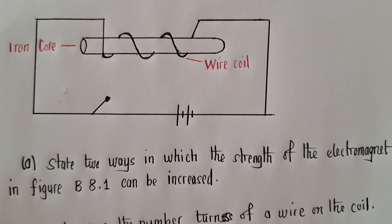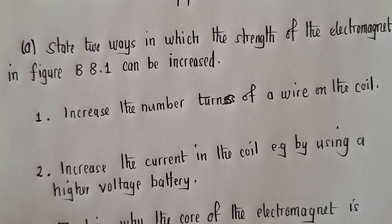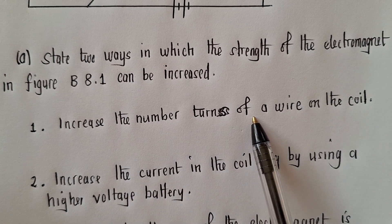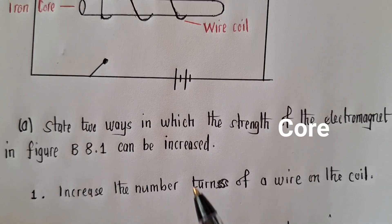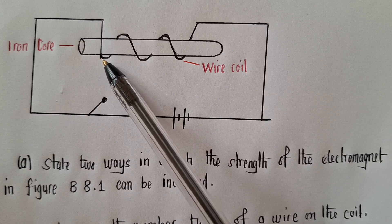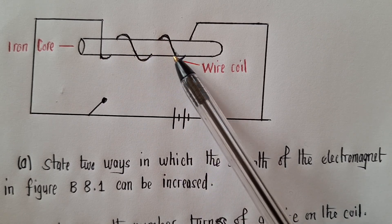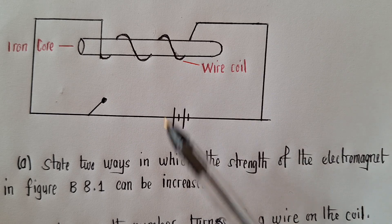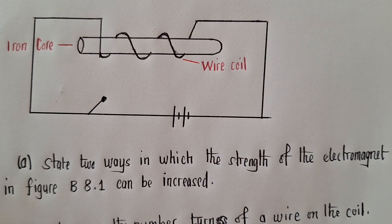So your answers can be written like this: increase the number of turns of a wire on the core. You can see right over here, I talked about the number of turns. So once you increase these turns, the magnetism will go higher.